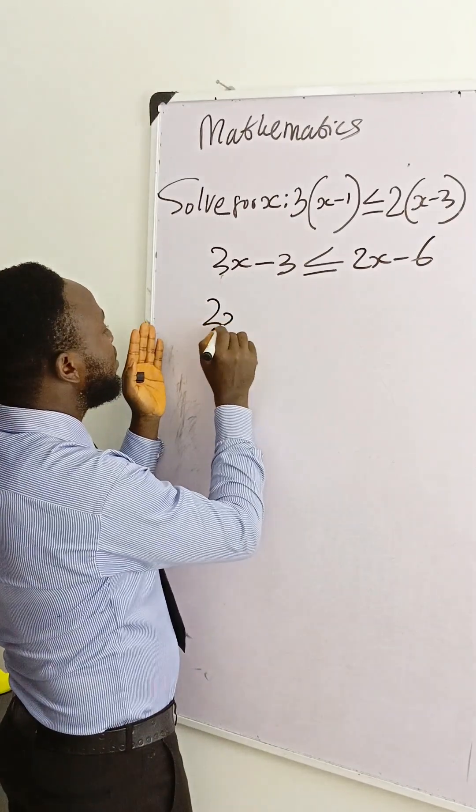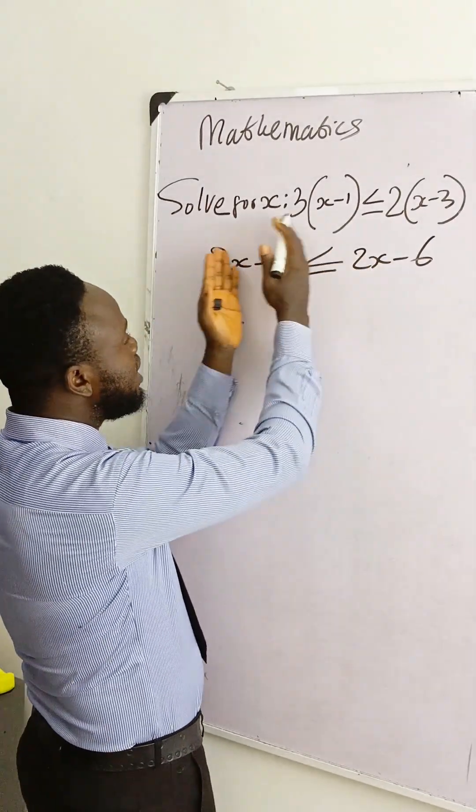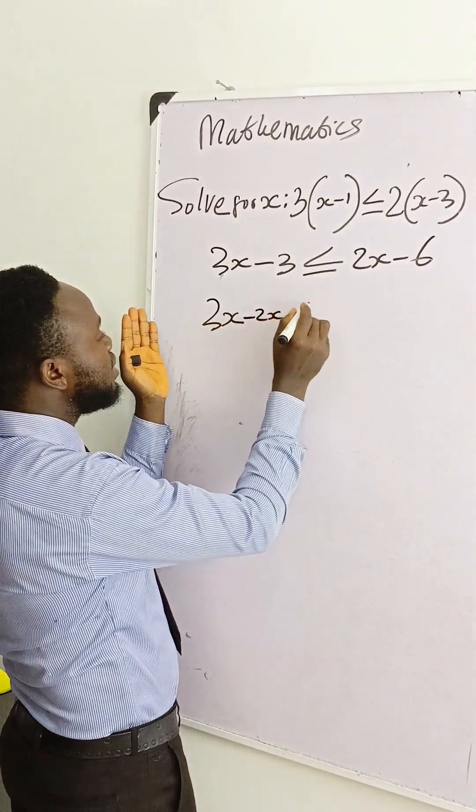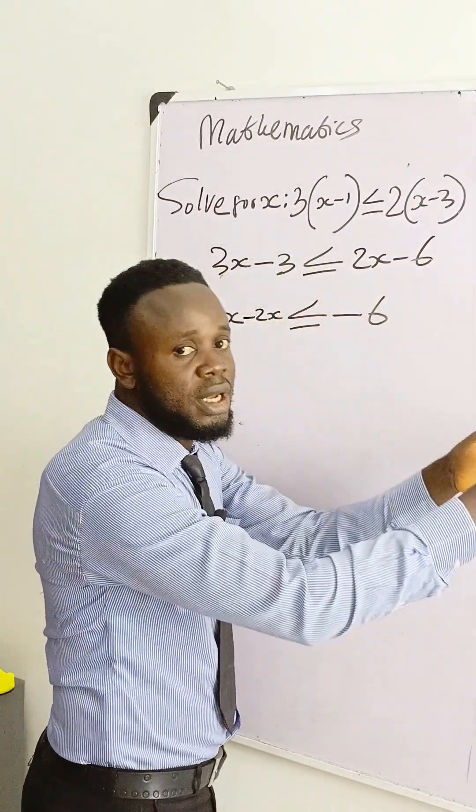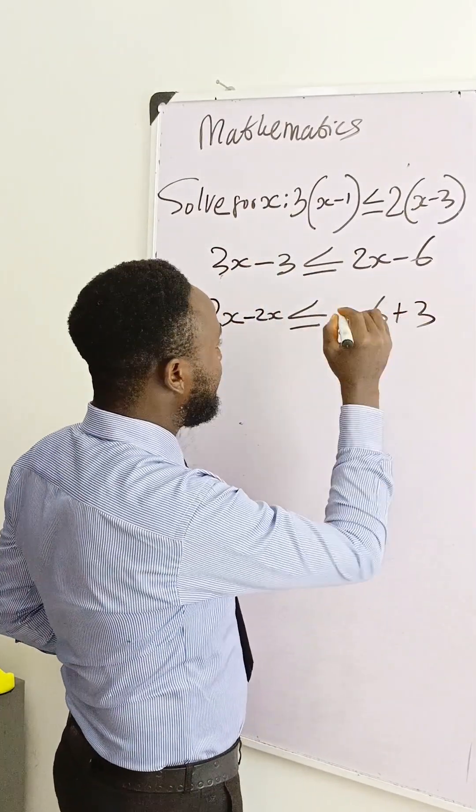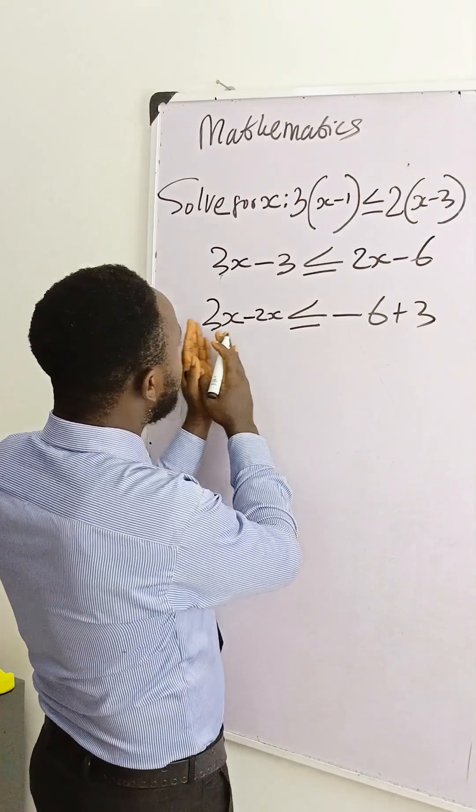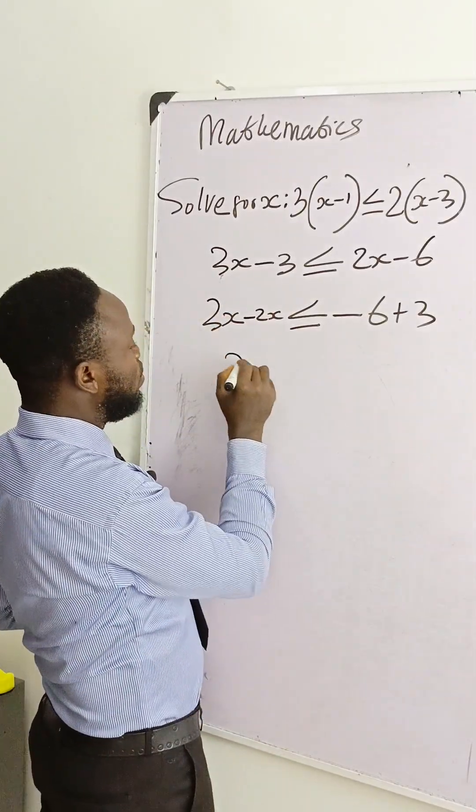If we do that, we have this 2x crossing here will be minus 2x, less than or equal to minus 6. Minus 3 crossing the other side will become plus 3, and here we have 3x minus 2x will remain.